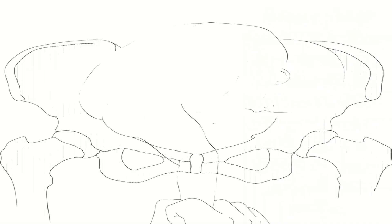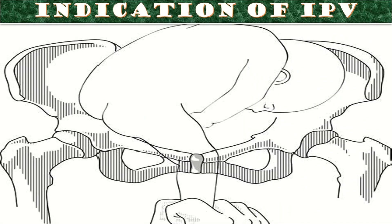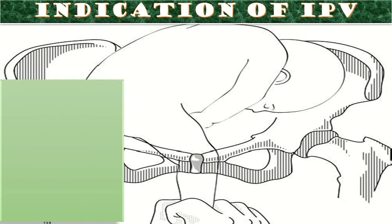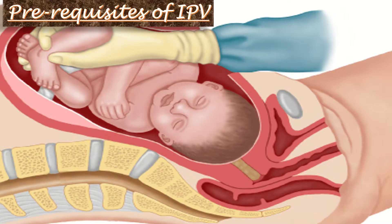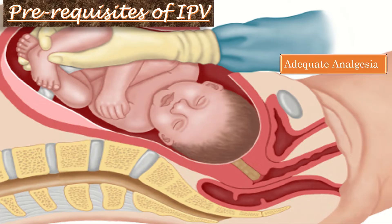What is the indication of internal podalic version? It is used for the delivery of the second non-vertex twin in multiple pregnancy. When the fetal heart rate is normal and membranes are intact, we go for external cephalic version, but if the fetal heart rate is abnormal or membranes are absent, internal podalic version is the preferred maneuver.